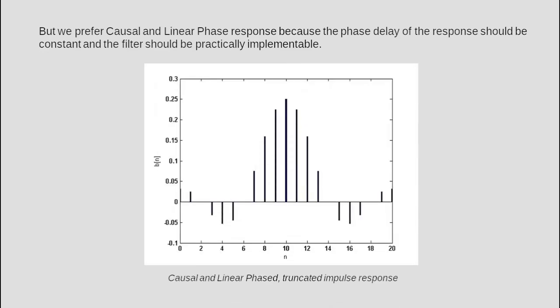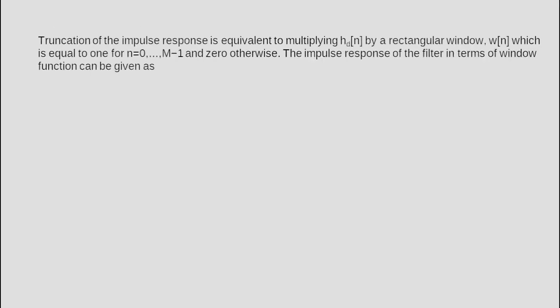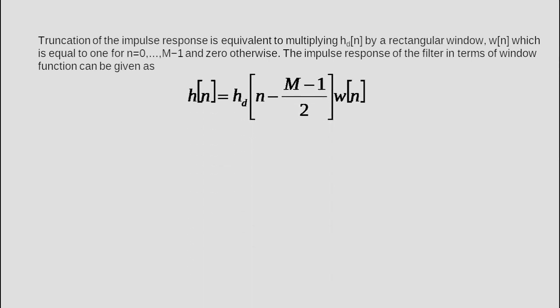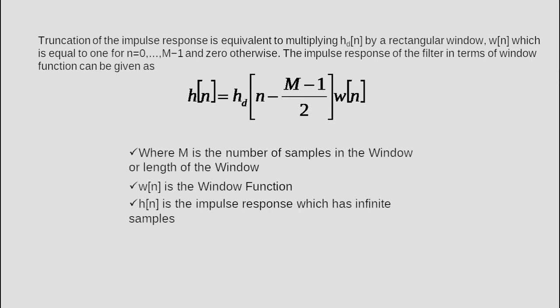The given figure shows the causal and linear phase truncated impulse response of the digital filter. The truncation of the impulse response is equivalent to multiplying H_D(n) by a rectangular window W(n), which equals 1 for n = 0 to M-1 and 0 otherwise. The impulse response of the filter in terms of the window function is: H(n) = H_D(n - (M-1)/2) · W(n), where M is the number of samples (length of the window), W(n) is the window function, and H_D(n) is the impulse response with infinite samples.